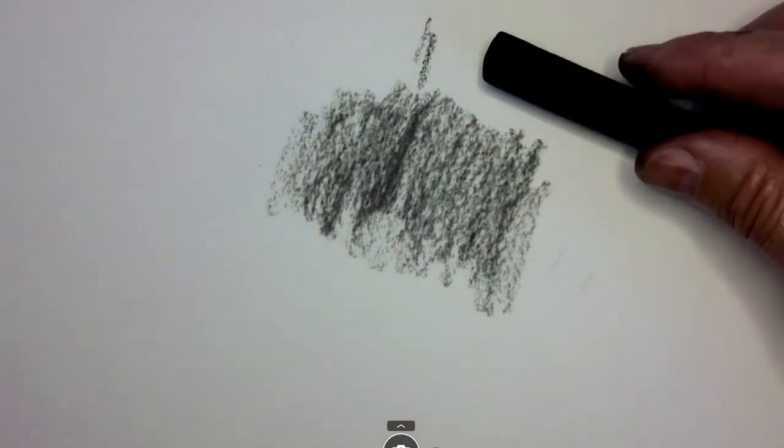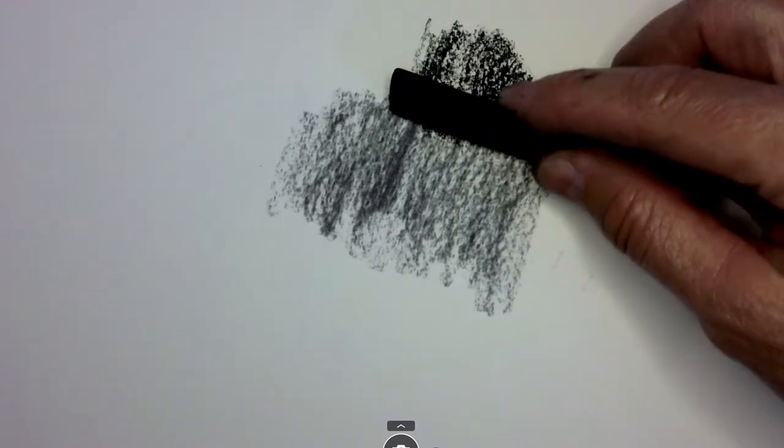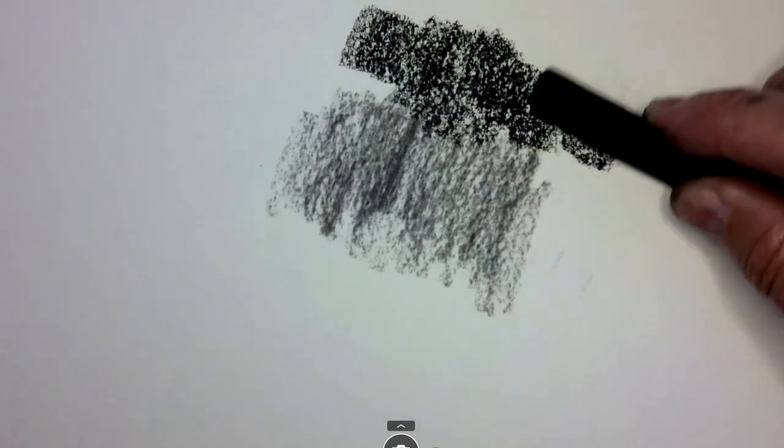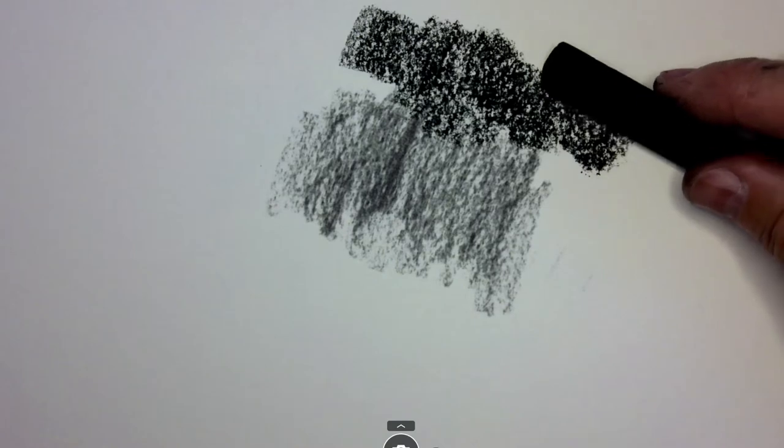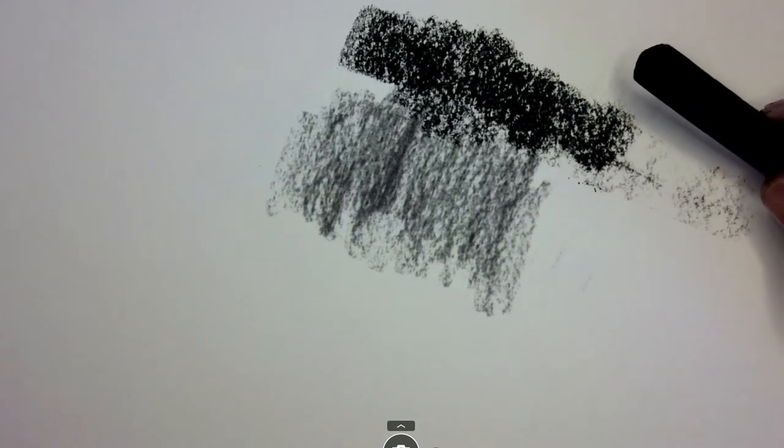With compressed charcoal, you get a much darker tone—you can see the contrast between compressed and willow. Again, the tops of the paper's texture knock the charcoal off, so the charcoal lands on the tops and not in the valleys.